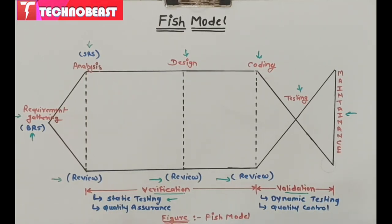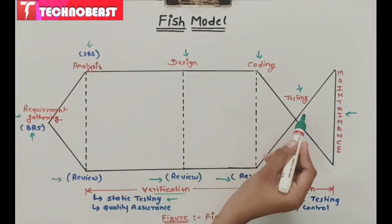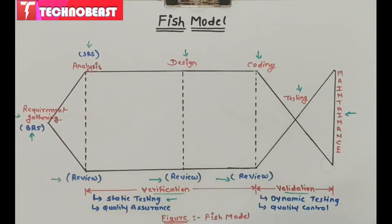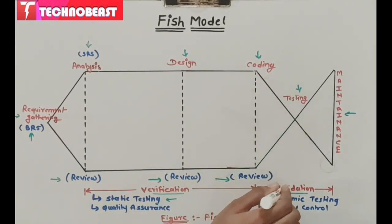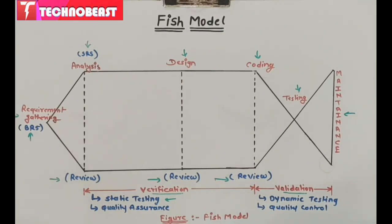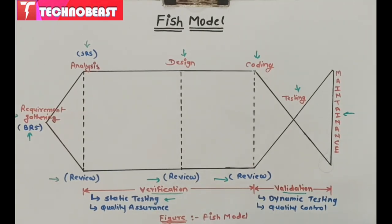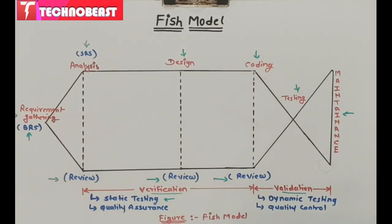This diagram looks like a fish, and it works in a fish-type manner — after completing the coding process, the testing part is done, and in the testing part the validations happen. We are going to see each part in detail: first how verification works, and then in validations how we check dynamic testing and quality control of the product. This is all about the diagram of the fish model.